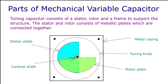Tuning capacitors have a stator, a rotor, and a frame to support the structure. The gang capacitor has a single shaft which is used to mechanically rotate the rotor against the stator. When the rotor plates come in close contact with the stator, the capacitor value is the maximum, and when they are moved away, the capacitance value is minimum. These capacitors have a capacitance value between 50 pF to 500 pF.